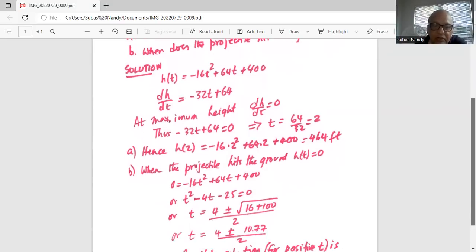So the coefficient of t squared, which is ax squared plus bx plus c, coefficient of t squared is a, which is 1, coefficient of t, which is b, is minus 4, and constant c is minus 25.